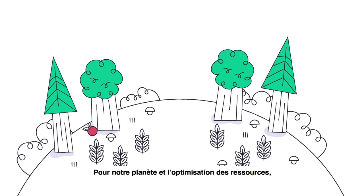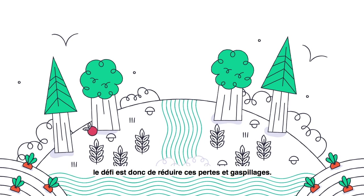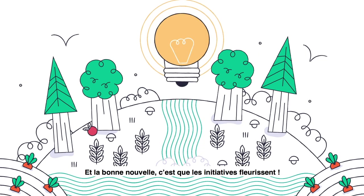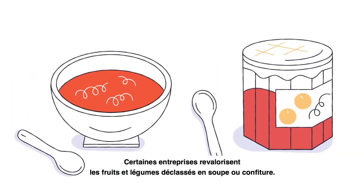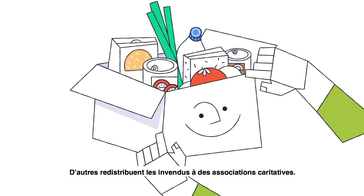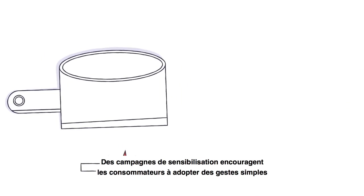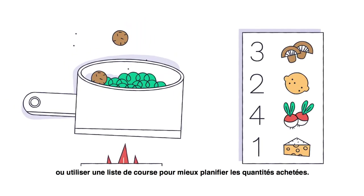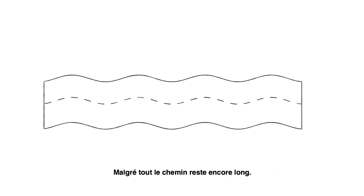The challenge is to reduce this loss and waste, and the good news is that initiatives are blossoming. Some companies use rejected fruit and vegetables to make soup or jam. Others redistribute unsold food to individuals or charities. Awareness campaigns encourage consumers to adopt simple measures at home, such as cooking with leftovers or using a shopping list to better plan what quantities to buy.